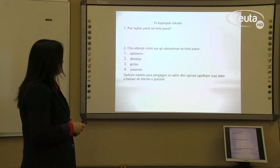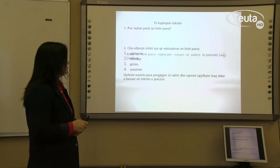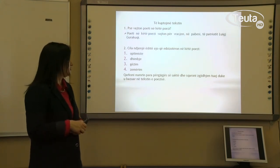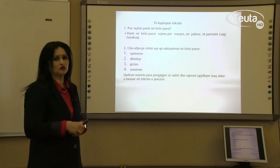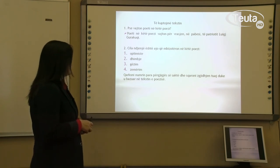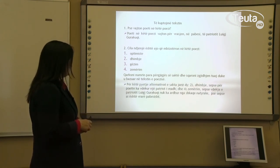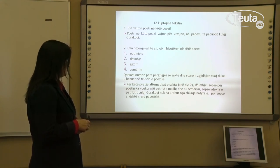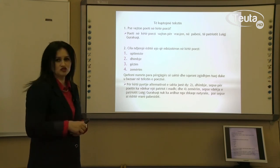Të kuptojmë tekstin. Pse vajton poeti në këtë poezi? Poeti në këtë poezi vajton për vrasjen e pabesit të patriotit Luigj Gurakuqi. Cila ndjenjë është ajo që mbizotëron në këtë poezi? Optimizëm, dhimbje, gëzim, zemërim? Qarko numrin para përgjigjes së saktë dhe arsyeto zgjedhjen tuaj duke u bazuar në tekstin e poezisë. Për këtë pyetje, alternativat e sakta janë dy: nëndy, dhimbje, sepse për poetin ka vdekur një patriot i madh, dhe katër, zemërim, sepse vdekja e patriotit Luigj Gurakuqi nuk erdhi nga shkaqe natyrore por sepse ai është vrarë pabesisht.